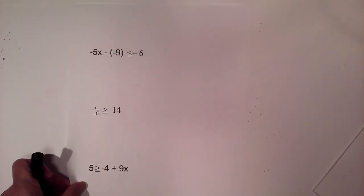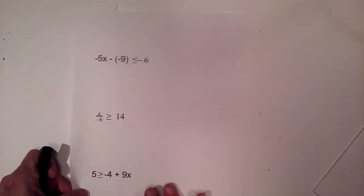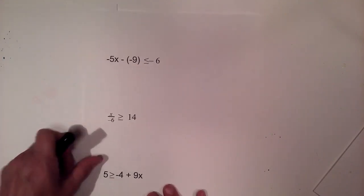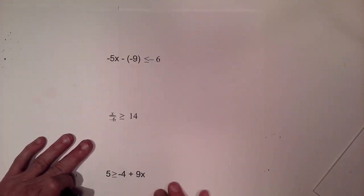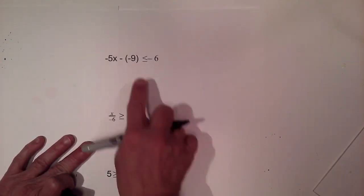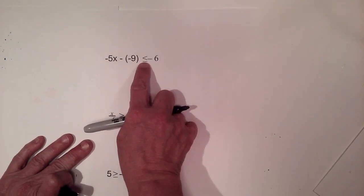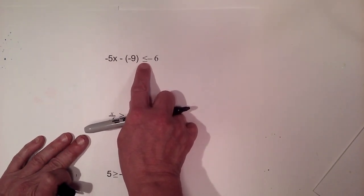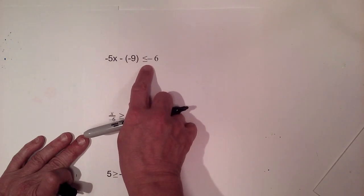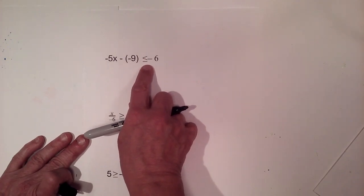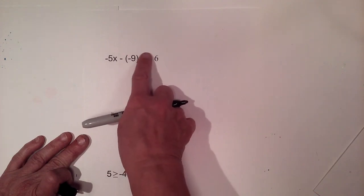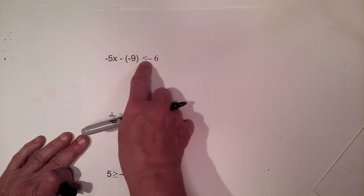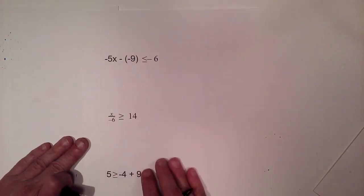Now let's look at some inequalities. We're going to treat them as if they're equations. The only time you change an inequality is if you multiply or divide by a negative on the very last step — then you flip the inequality.